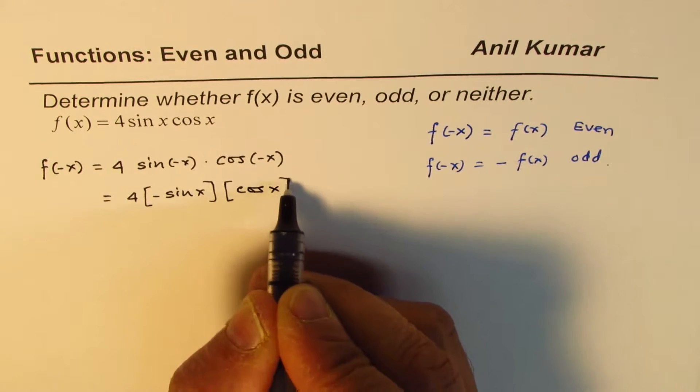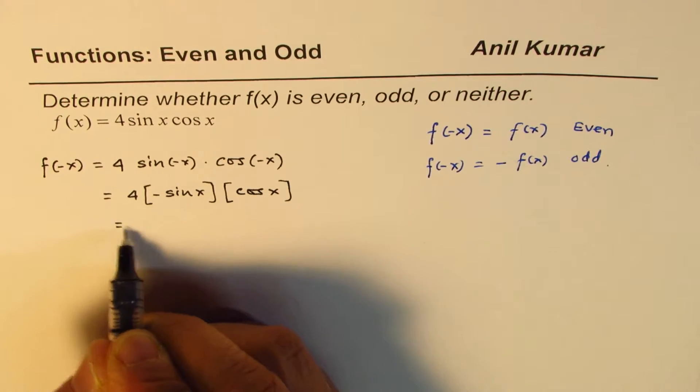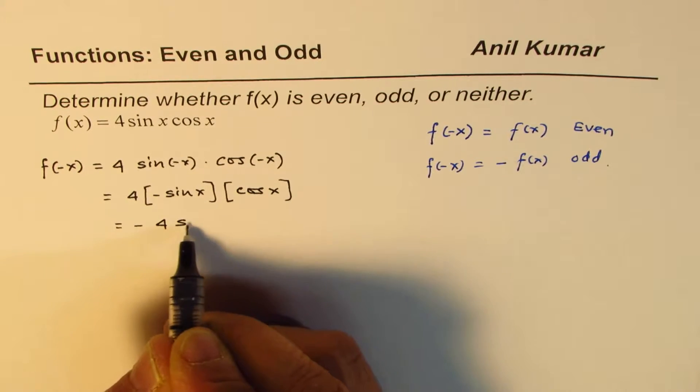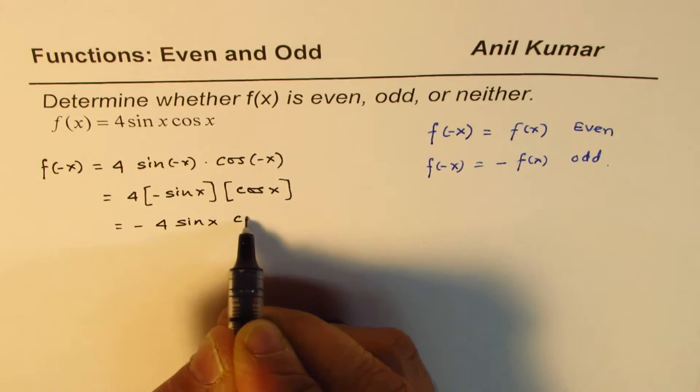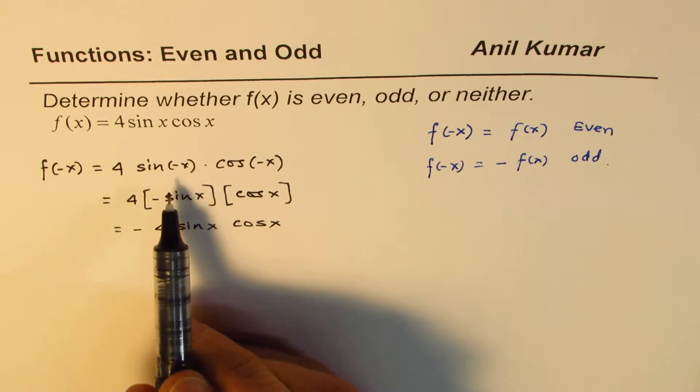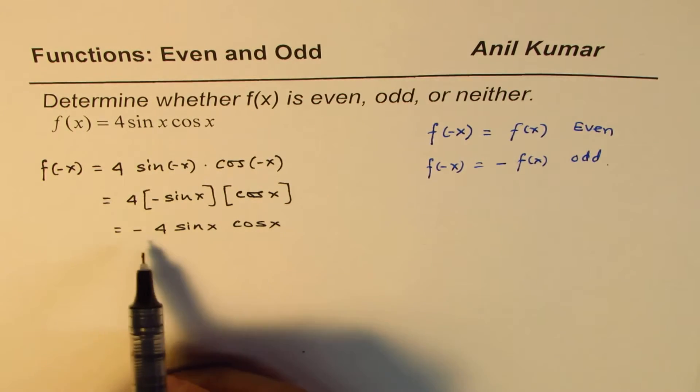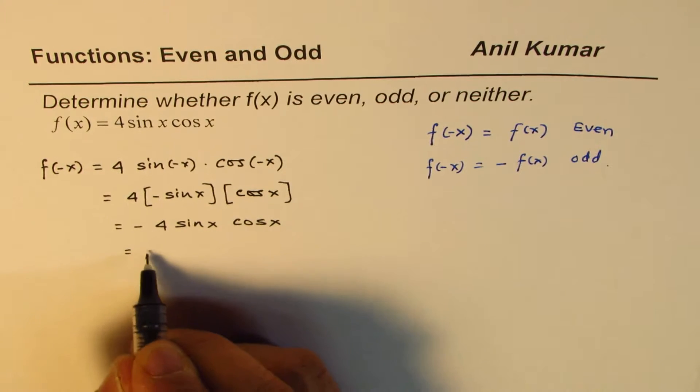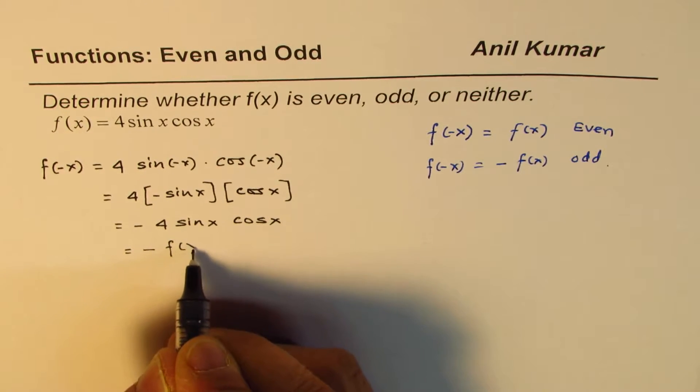When you multiply, you get -4sin(x)cos(x). So what you also see here is that the product of even and odd functions results in an odd function. This is -f(x).